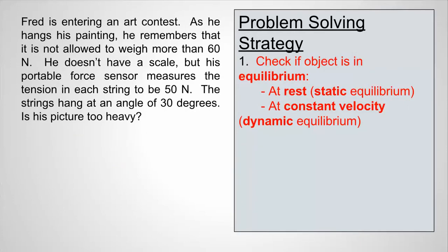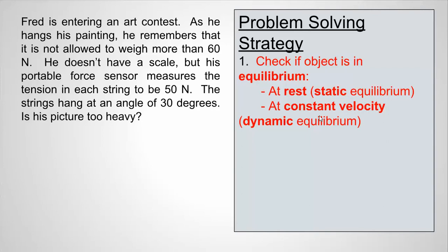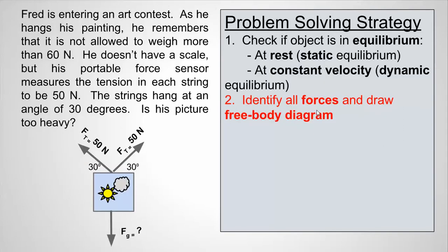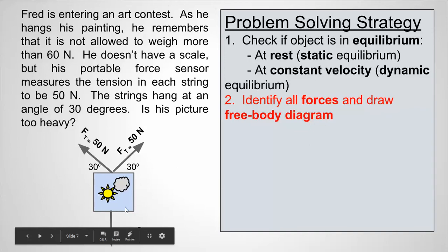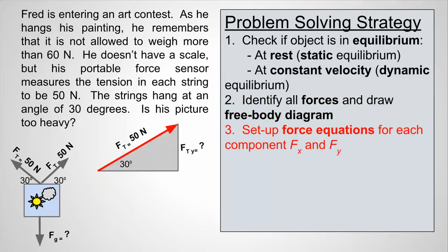To solve static equilibrium problems, the first thing we check in any problem involving forces is: is the object in equilibrium? Is it at rest — that's static equilibrium — or at a constant velocity, which is dynamic equilibrium? This case is at rest, so it's in static equilibrium, meaning the sum of forces is zero. Next, we need to identify all the forces and draw a free body diagram. For this painting, we have the force of tension going up and to the right at 30 degrees above horizontal, and tension going up and to the left at 30 degrees above horizontal. We also include the weight — the force of gravity — pointing down, which is what we're looking to find. Once we've identified all the forces, we sum the forces in the x and y directions and set them equal to zero.